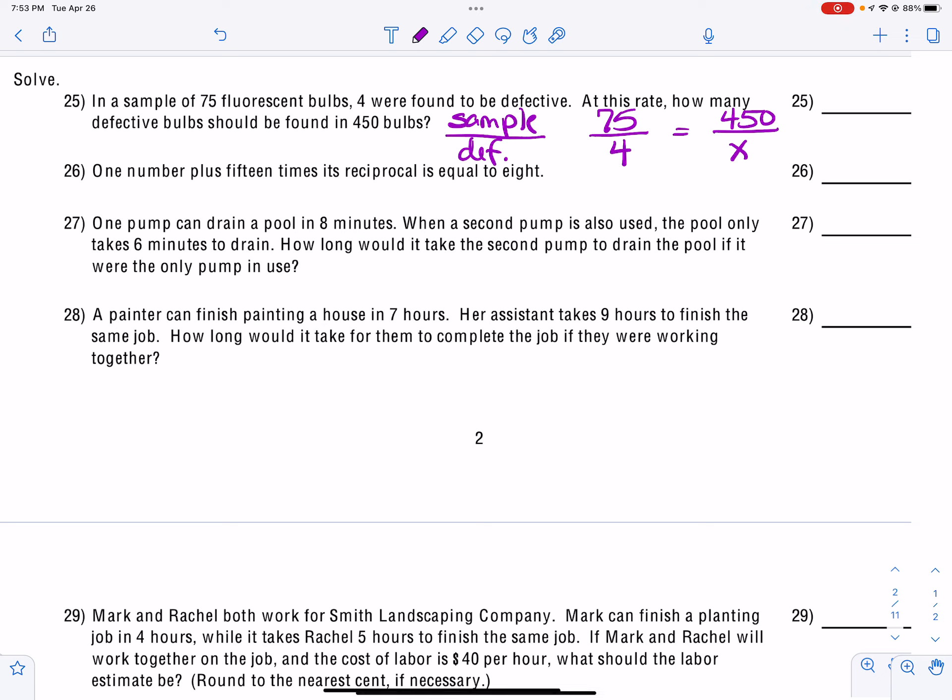So we're going to cross multiply, and we're going to take 4 times 450 and then divide it by 75. And that's going to tell us that there is expected to be 24 defective bulbs out of 450.